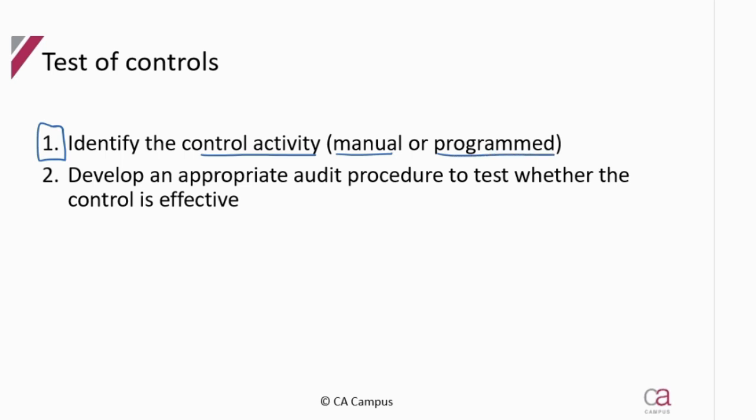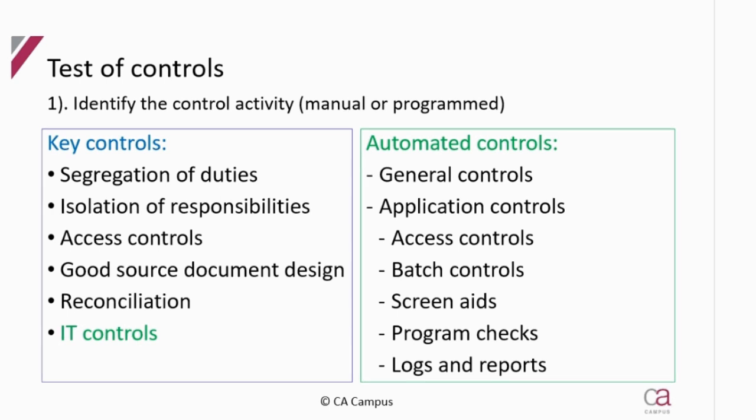When identifying controls — whether manual or programmed — the easy part is finding a way to test them. Once identified, you develop your audit procedure to test whether the control is effective, and you stop there. You don't need to conclude unless the question asks you to. If controls don't seem to be working, you would adjust toward a more substantive approach.